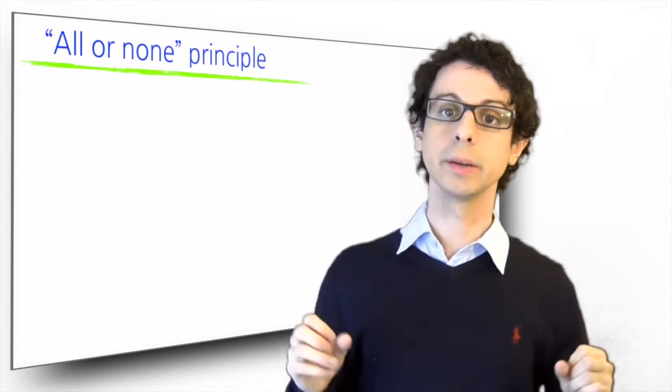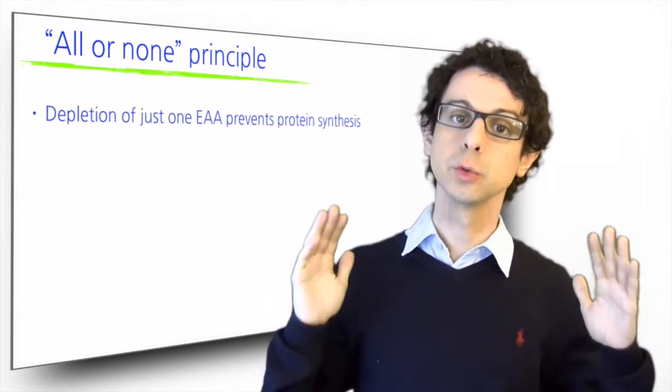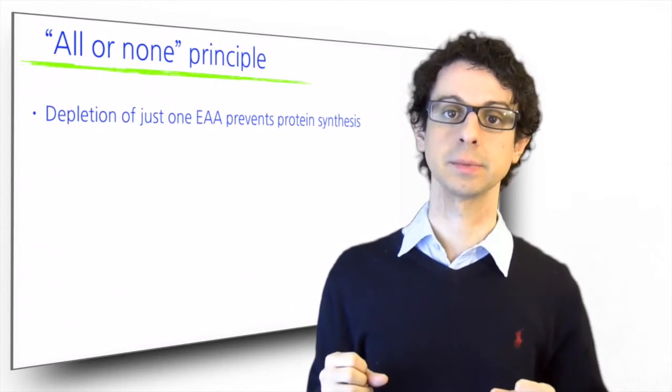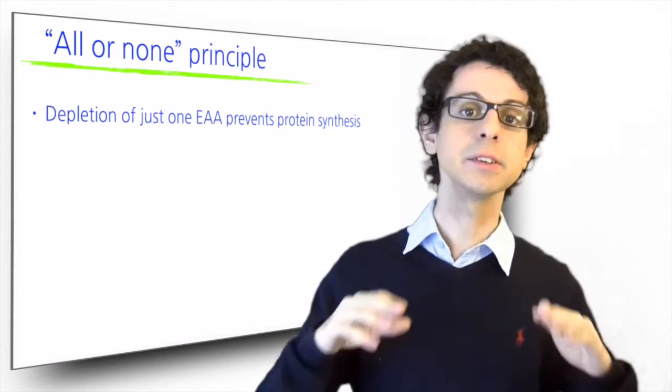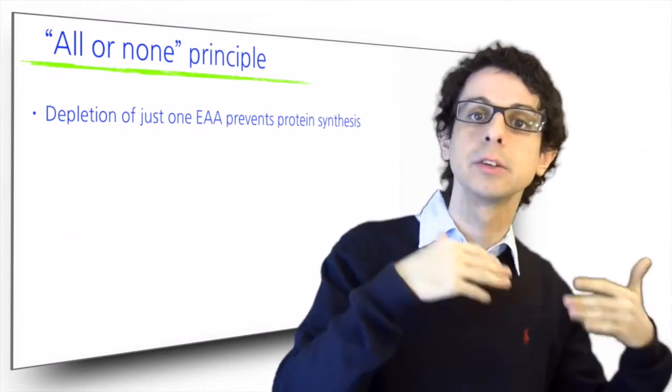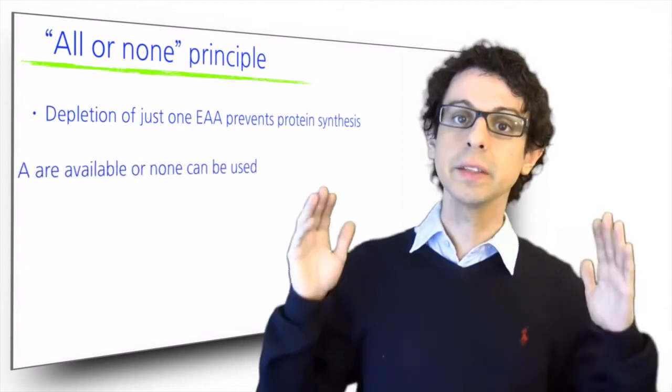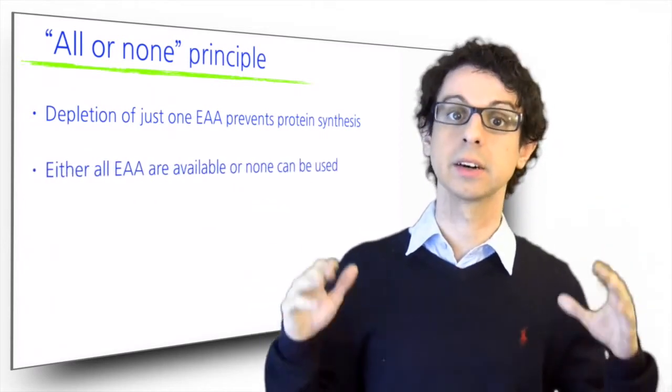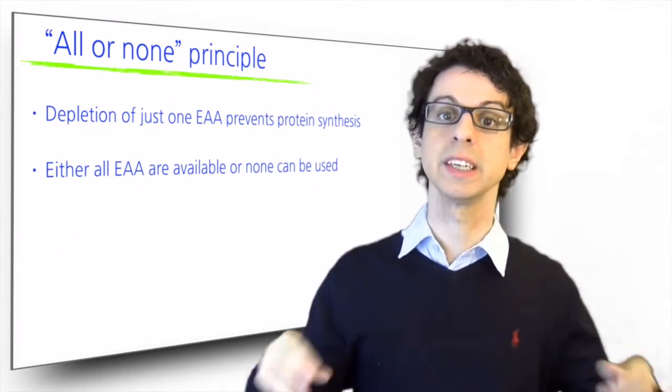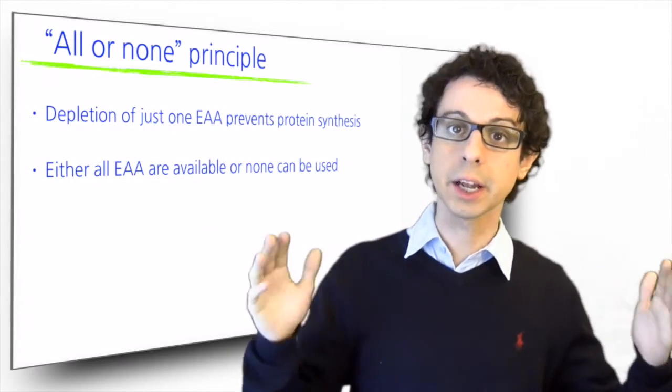The all or none principle applies to essential amino acids as well. Depletion of just one essential amino acid prevents protein synthesis. We do not have lysine. There is no way we can make our protein using something else. Just like we cannot ask the plumber to put up the walls. We needed the bricklayer for that. And so either all essential amino acids are available or none can be used. It doesn't matter that we have a lot of the other ones. We need that one. Even if we have seven plumbers available, we still cannot build our walls.